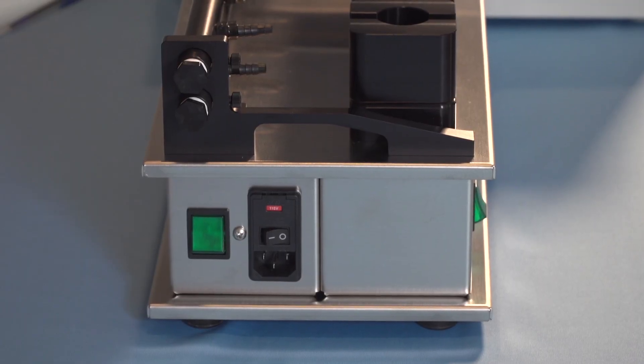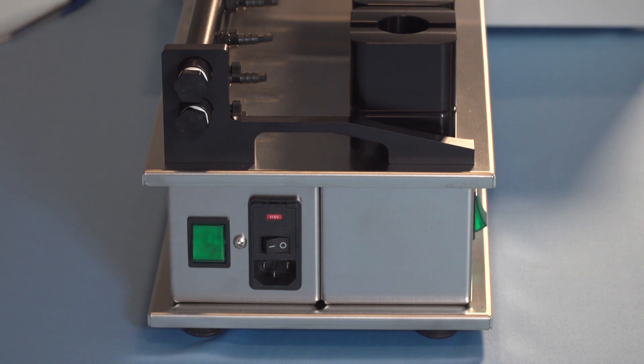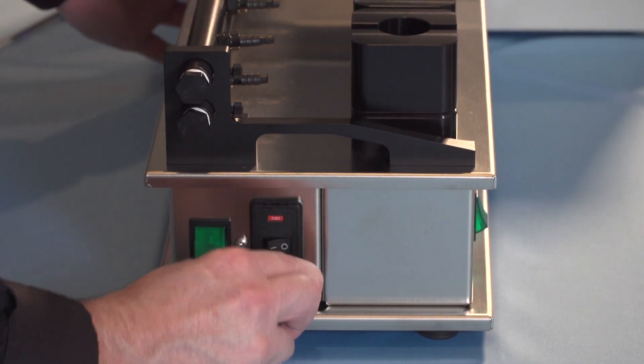Ensure the power switch on the power connector is in the off position. Plug in the power cord to the stirrer then into an outlet for power.